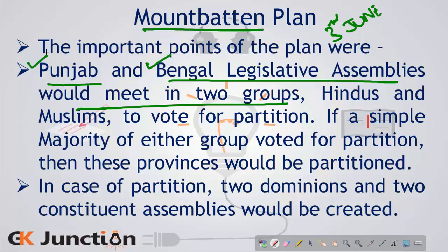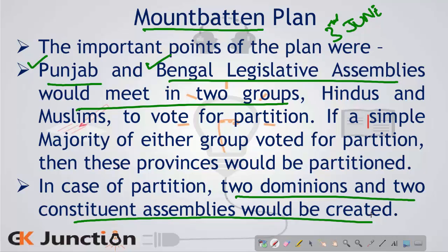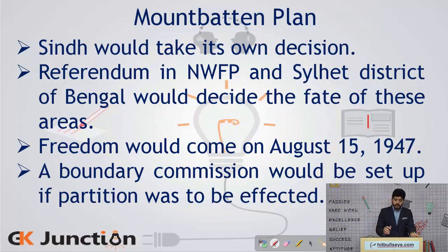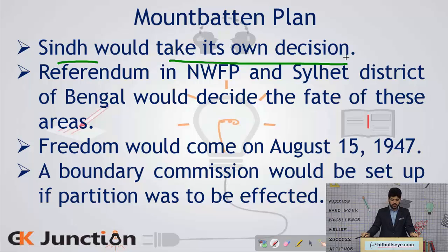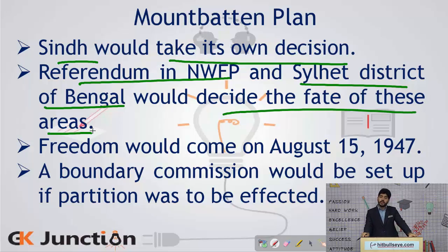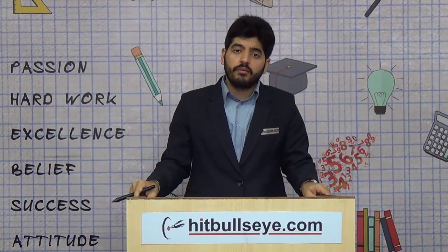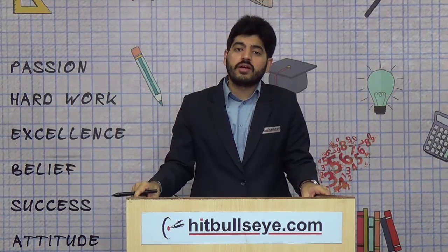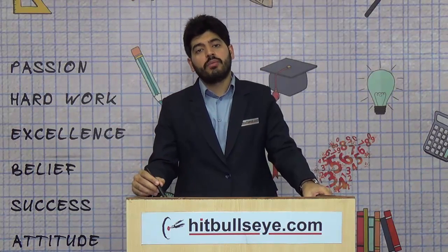This provision applied only to Punjab and Bengal Legislative Assemblies, since those were the only provinces affected by a potential partition. If either group decided for partition, two dominions and two constituent assemblies would be created — one for India and one for Pakistan. Sindh would take its own decision on whether to join India or Pakistan. A referendum would be held in the North-West Frontier Province, and the Sylhet District of Bengal would decide its own fate. It was also decided that freedom would come on August 15, 1947 — earlier than the 1948 date Attlee's government had originally indicated.